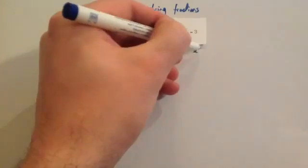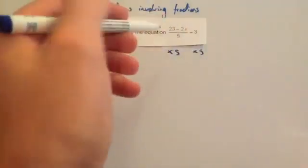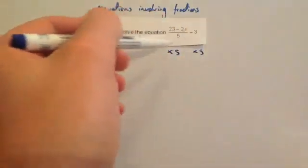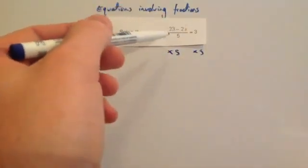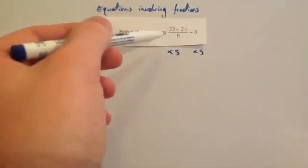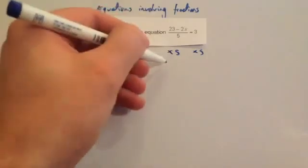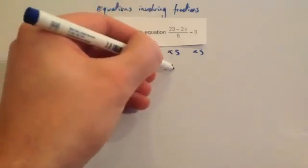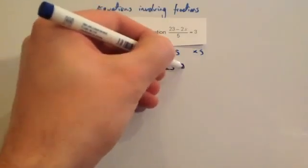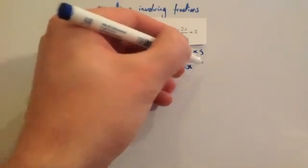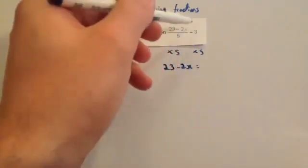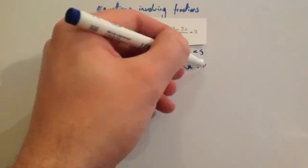We times both sides by 5. Timesing the left hand side by 5 gets rid of the divide by 5, so you're just going to be left with 23 subtract 2x equals, and 3 times 5 is 15.